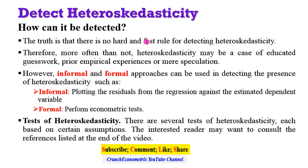The truth is that there is no hard and fast rule for detecting the problem. Therefore, more often than not, heteroskedasticity may be a case of educated guesswork, your previous empirical experiences, or by mere speculation. However, there are informal and formal approaches by which the problem can be detected. The informal approach is by plotting the residuals from the regression against the estimated dependent variable, while the formal is by performing various econometric tests.